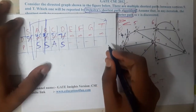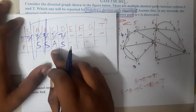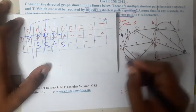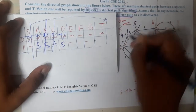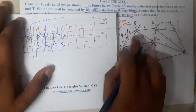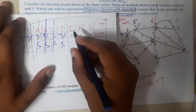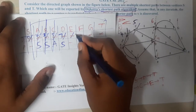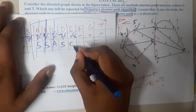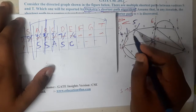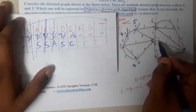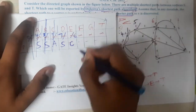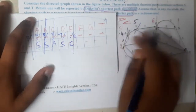Among remaining nodes, c with distance 5 is minimum. From c, we can go to e at cost 1, so 5+1=6 — e is updated to 6 with parent c. To d the cost is 5+3=8, but d already has 7 which is less, so no update. Node c is done.